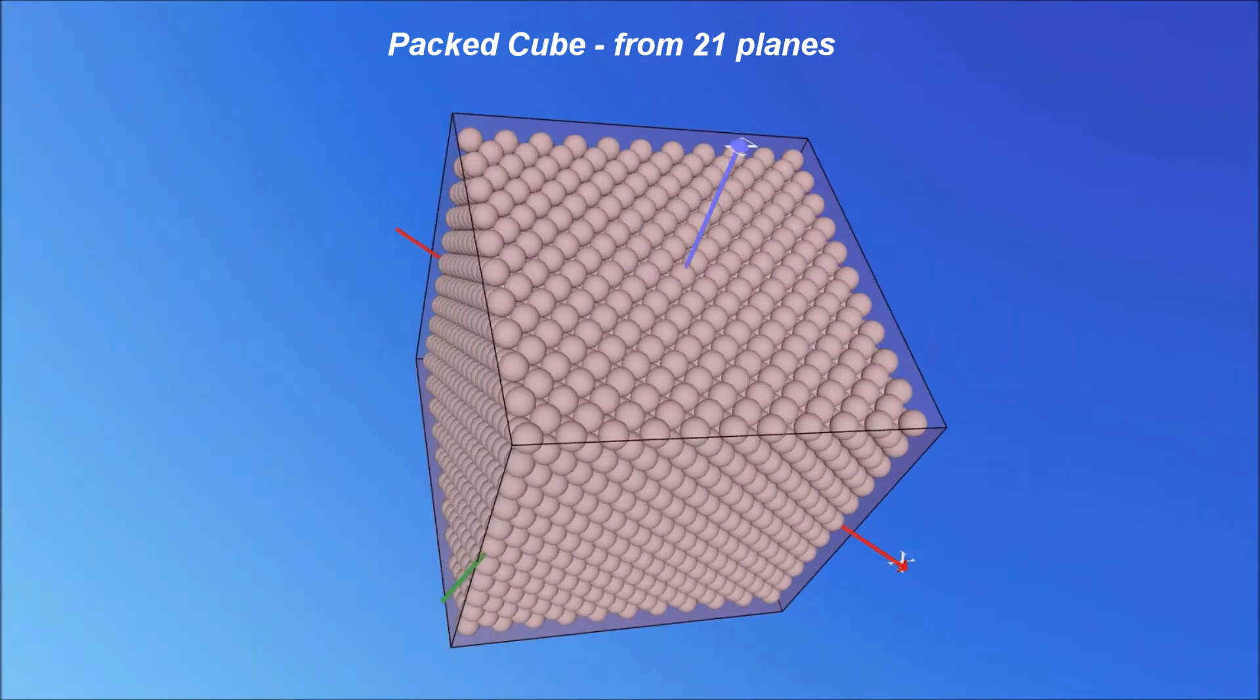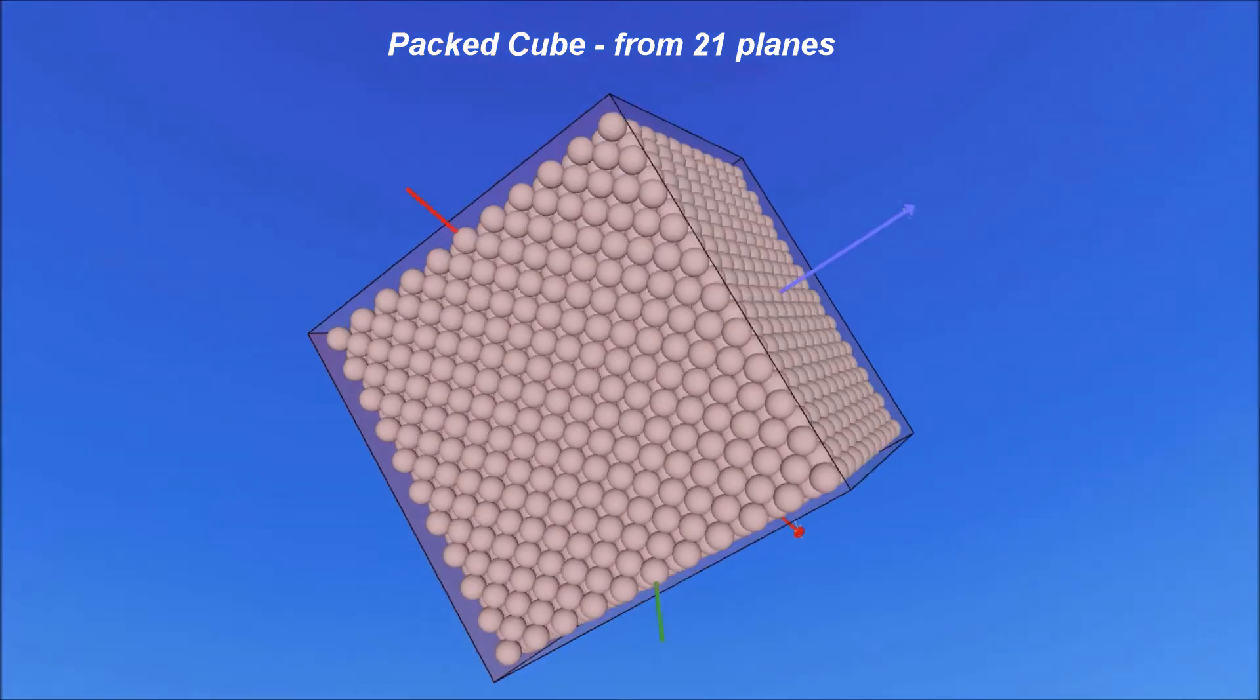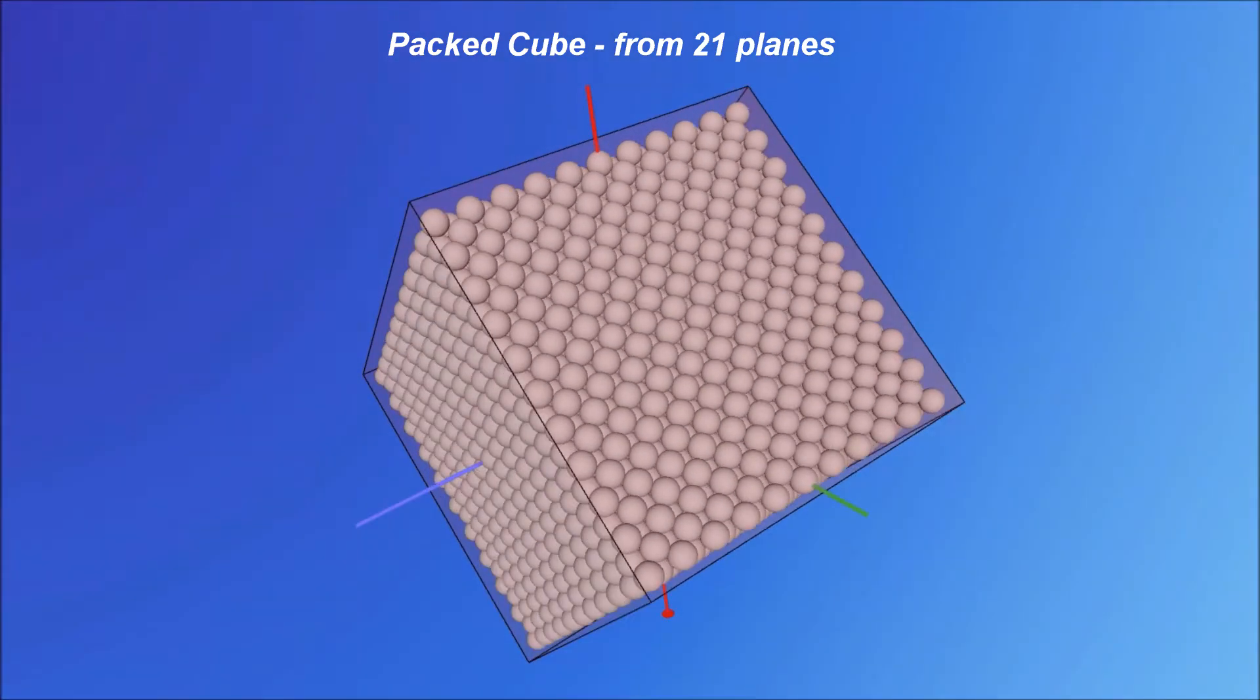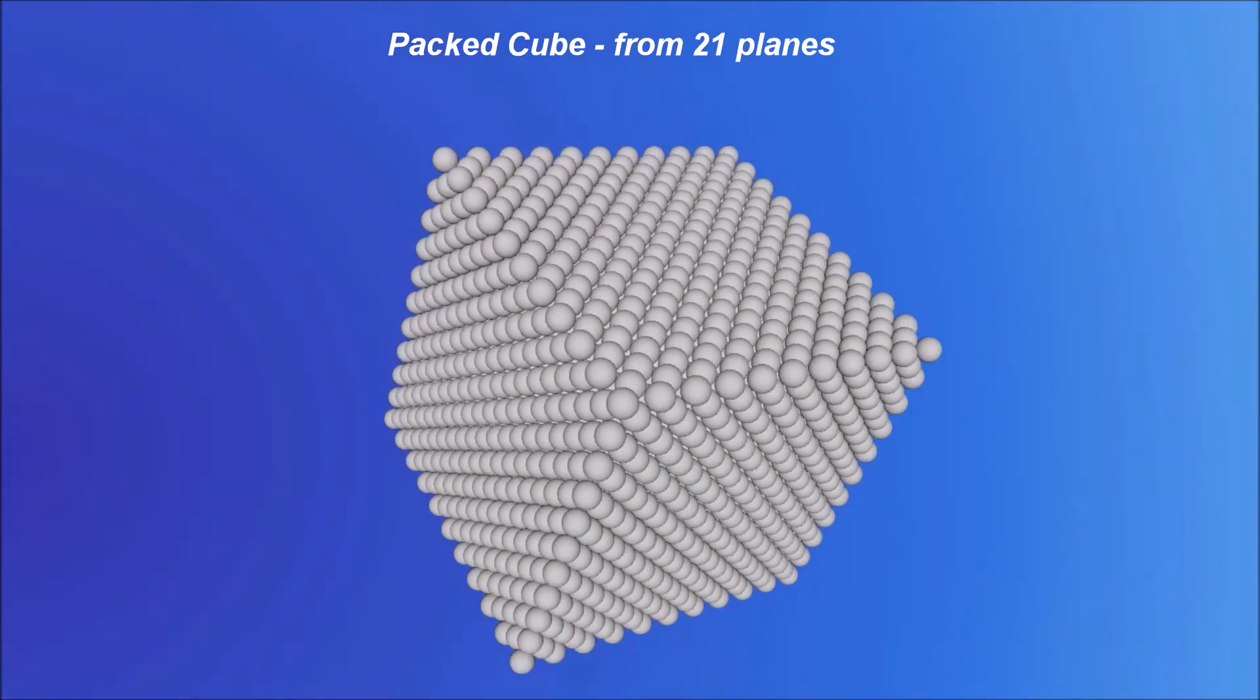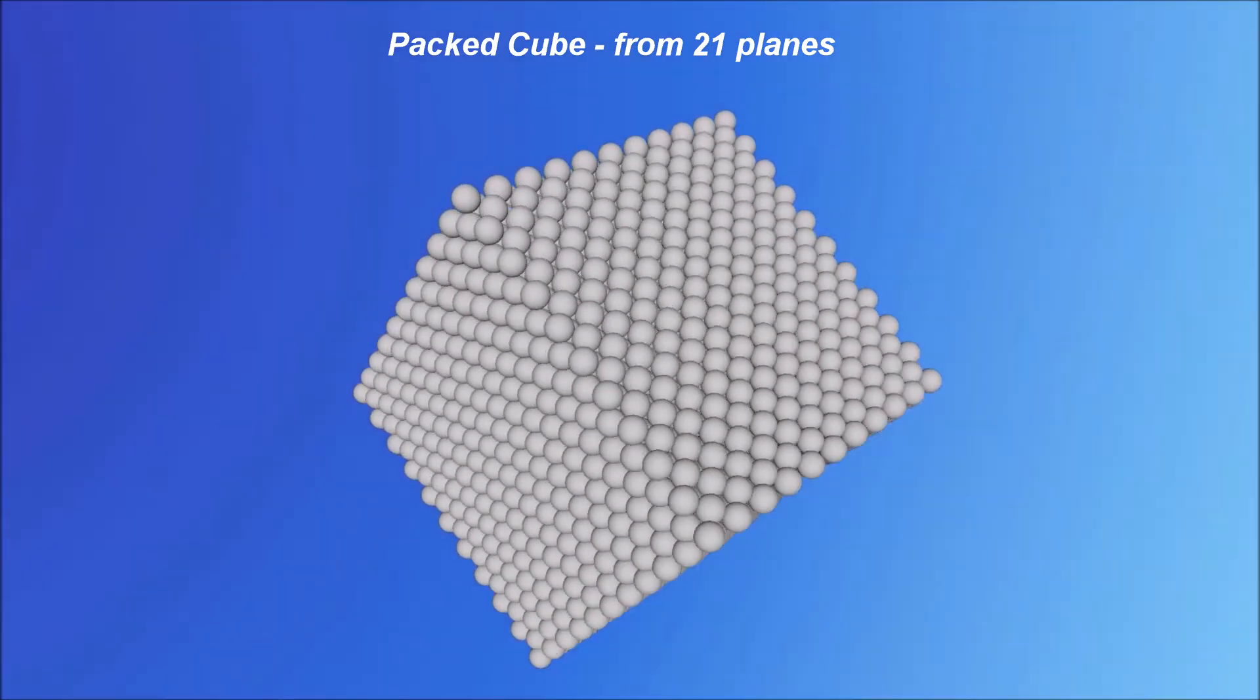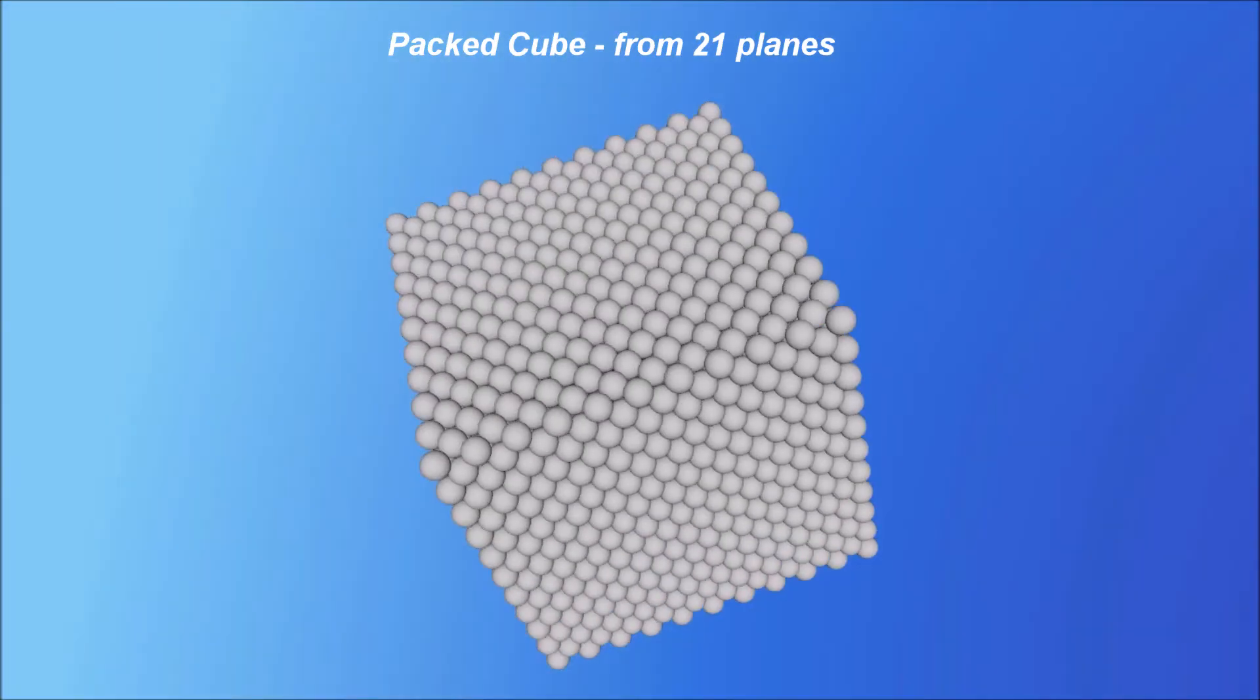The cube is the best-known platonic solid. Its simplicity has made it the most used object, pattern and structure in our everyday life. The cube's simplicity has also got it a special place in math and geometry.